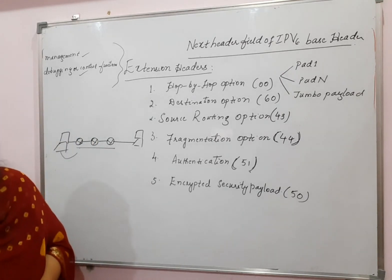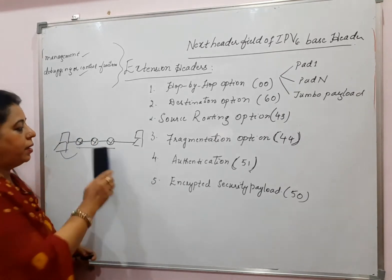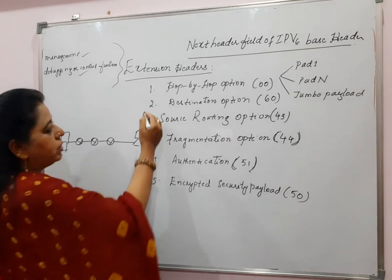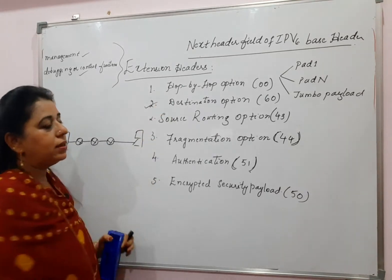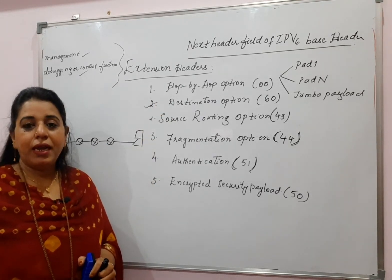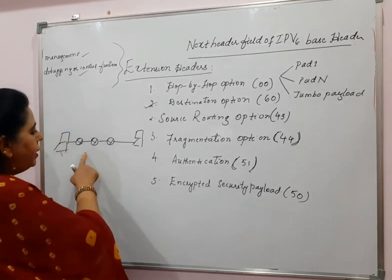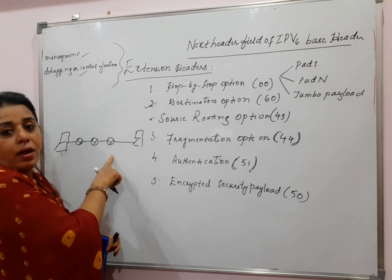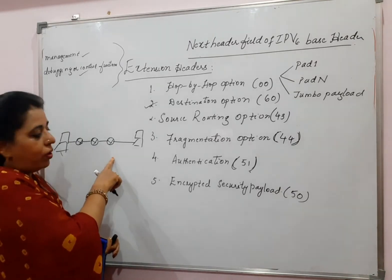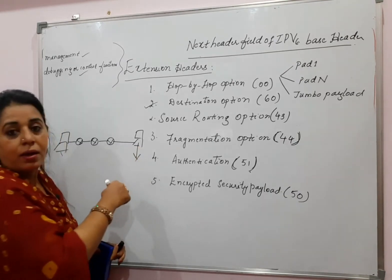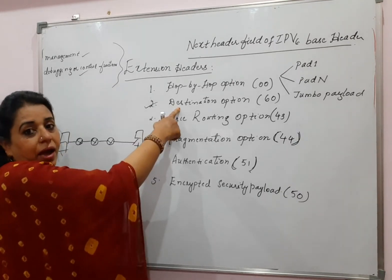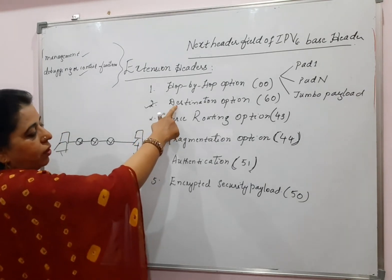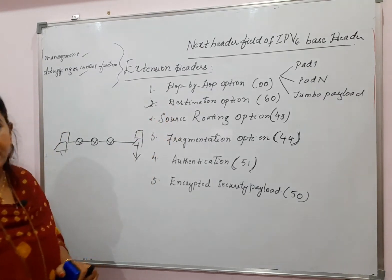But if the source does not want the intermediate routers to know certain information, then it uses the destination option. This means the intermediate routers are not given access to that information — only the destination host can access it. That is the meaning of the destination option.